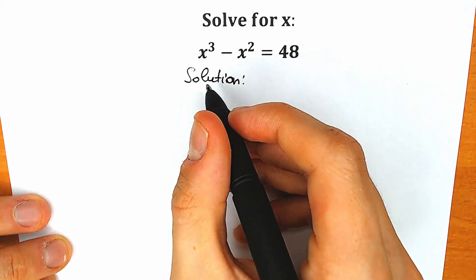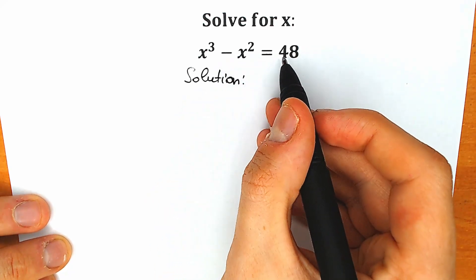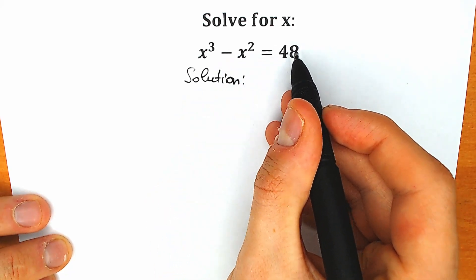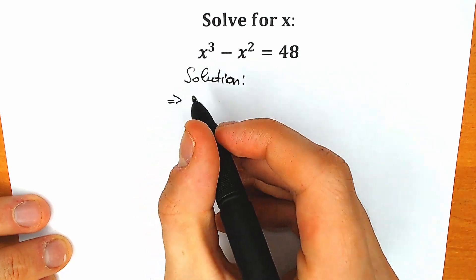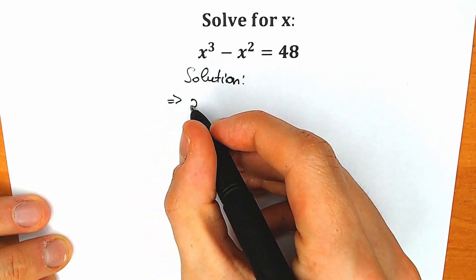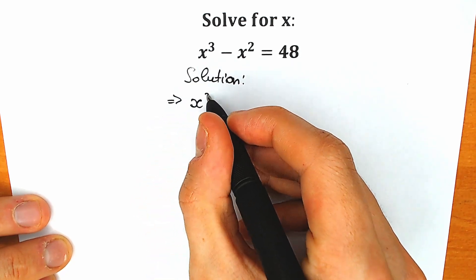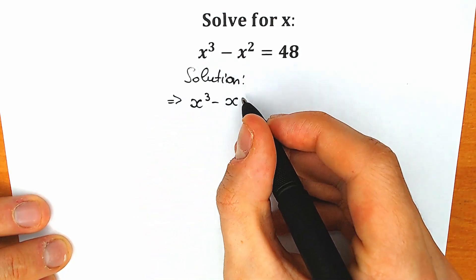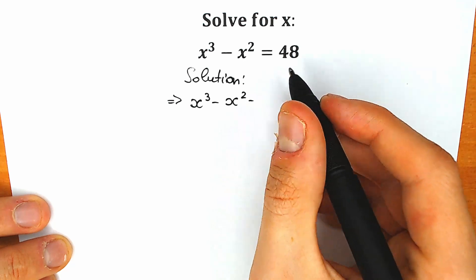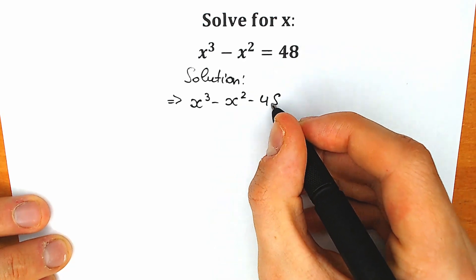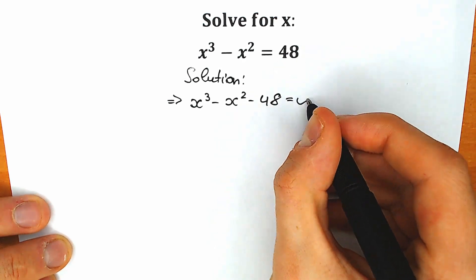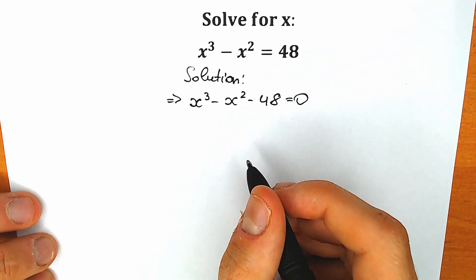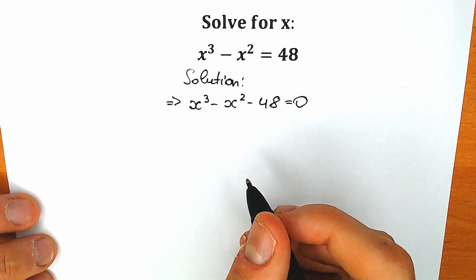First of all, let's rewrite it real quick. Let's bring this 48 from our right side to the left side. As a result we will have x-cube minus x-square minus 48 equal to zero. So this is our equation.